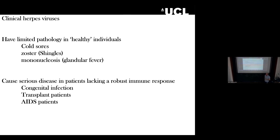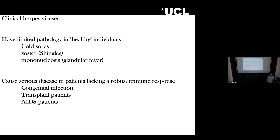Clinical herpes tends to cause limited pathology. Cold sores in the alphas, zoster and shingles in varicella, glandular fever from Epstein-Barr virus, or CMV infection which gives cold-like symptoms for a few days. People often don't even know they've been infected with cytomegalovirus because it often doesn't have a clinical presentation.